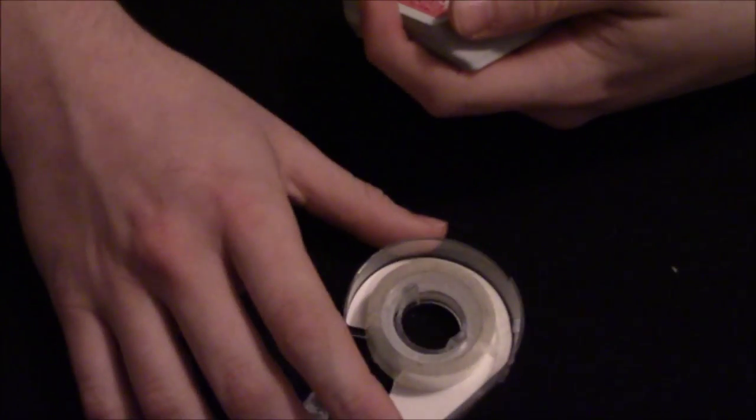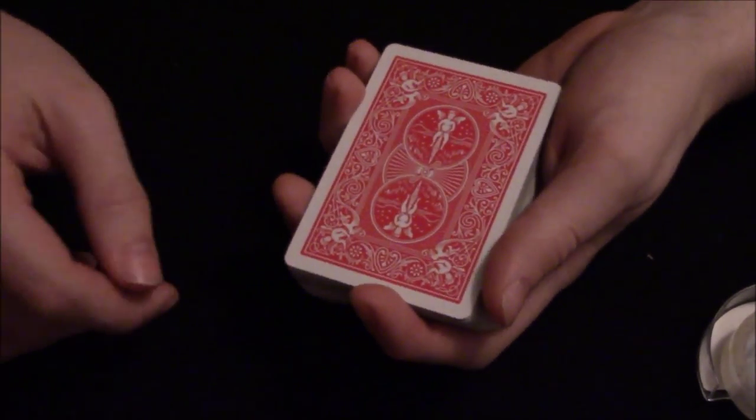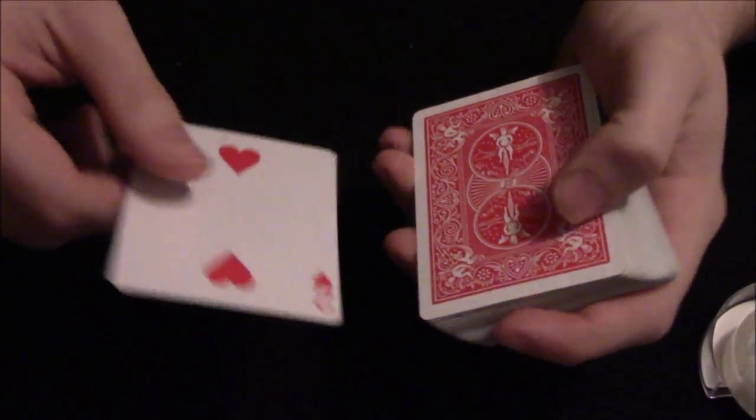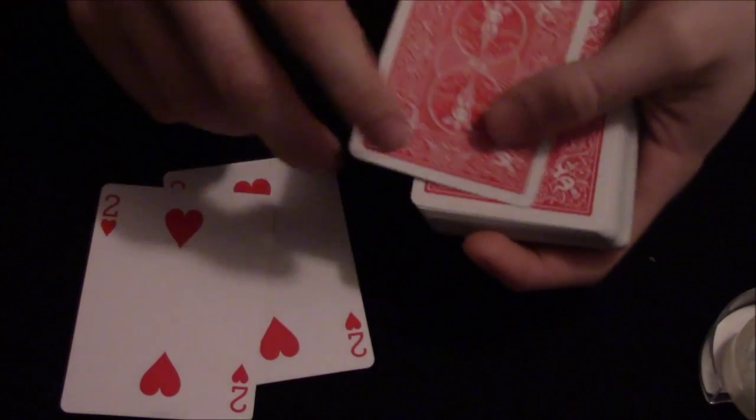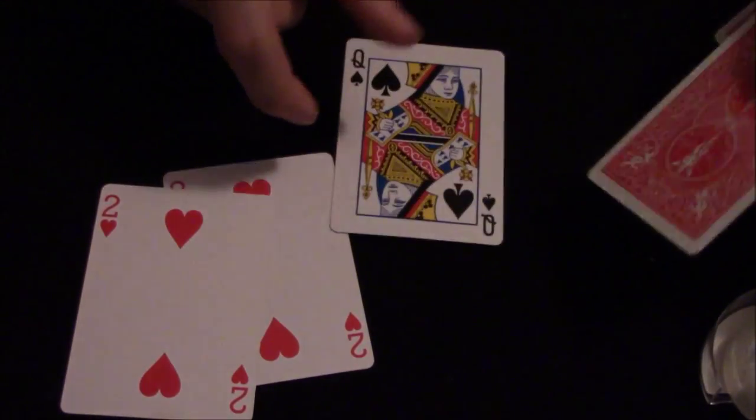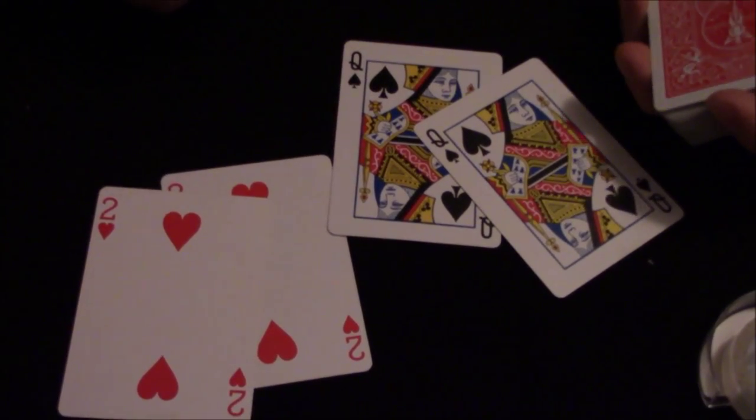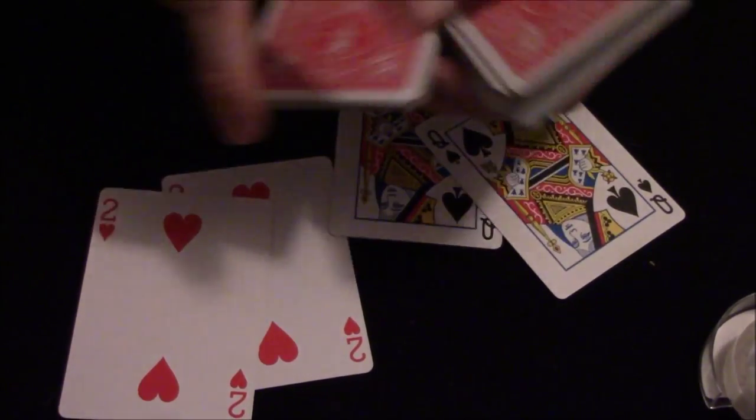You're going to need a deck of cards, some double-sided tape or clear magician's wax. The wax works better, but I don't have any. You're going to need two sets of duplicates, two two of hearts, two queen of spades, or you can use whatever duplicates you want to use, and then your deck of cards.